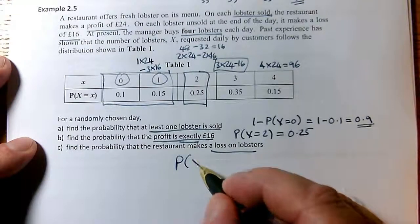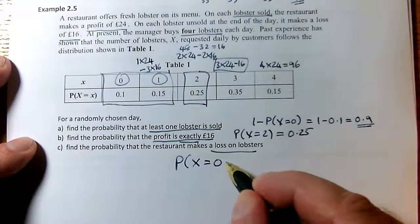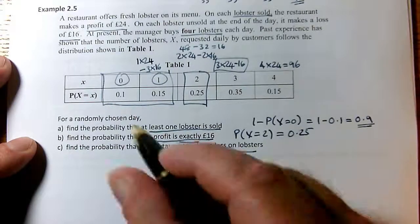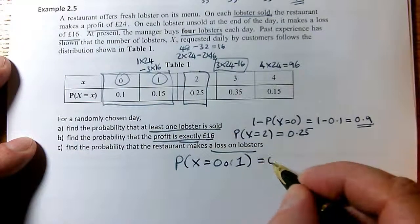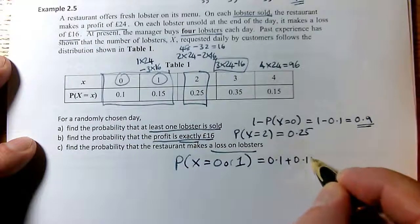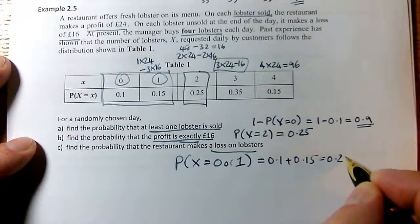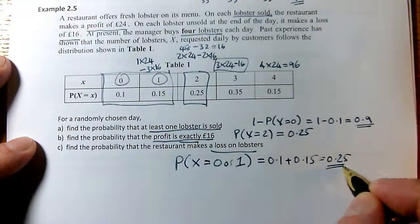the probability that I need is the probability that x is 0, or that it's 1, because both of those are loss-making numbers of lobsters to sell. So this is 0.1 plus 0.15, which is 0.25, is the probability that I need.